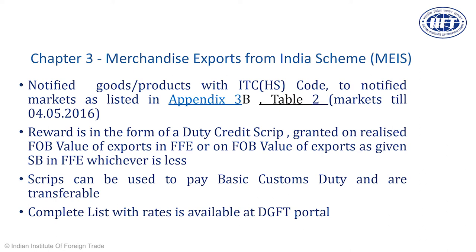The chapters in the foreign trade policy involve some duty exemption, benefit, or duty remission. Chapter 3 of the foreign trade policy has historically been about various incentives or rewards given to the exporting community. The current foreign trade policy has the scheme known as the Merchandise Exports from India Scheme — MEIS — under which if an exporter has exported goods mentioned in appendix 3B table 2, they are eligible for a certain percentage of the total value of the shipping bill or the amount realized by export of those items, whichever is less.